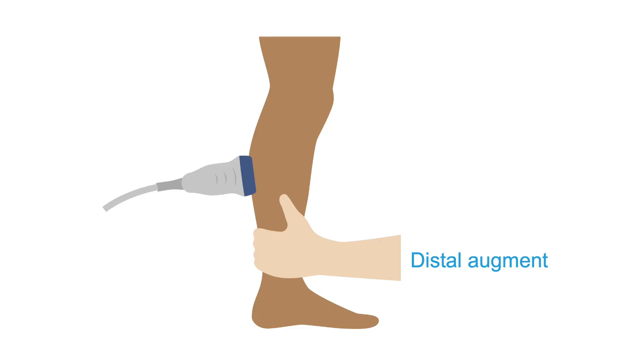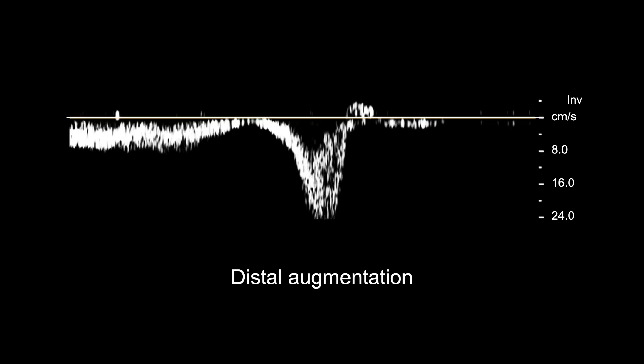We saw earlier that distal augments are applied frequently in lower extremity venous studies. Distal augments test patency of the veins proximal to the area you squeeze. A normal distal augment should have an obvious inverted peak below the baseline, meaning there is good blood movement toward the heart with augmentation.